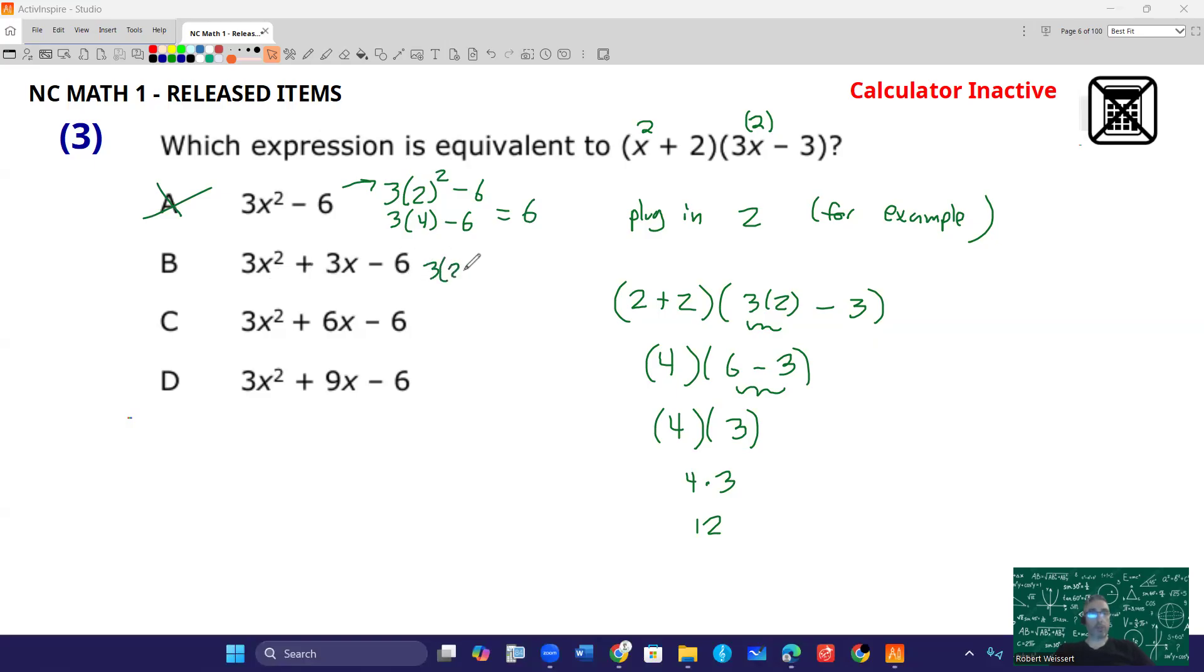3 times 2 squared plus 3 times 2 minus 6. That's going to be 3 times 4, 12 plus 3 times 2, 6 minus 6. 6 and minus 6 cancel out. You're left with 12. 12 is the answer.